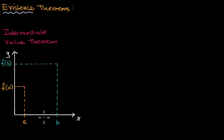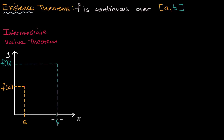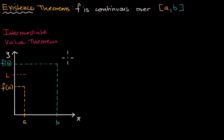In the intermediate value theorem, we assume that if we're continuous over the closed interval from a to b — and in fact all of these existence theorems assume that our function is continuous over the closed interval from a to b — then we take on every value between f(a) and f(b). Pick a value between f(a) and f(b), including f(a) or f(b), and call that value L. The intermediate value theorem tells us that, given continuity over this interval, there must be a value between a and b that takes on the value L.